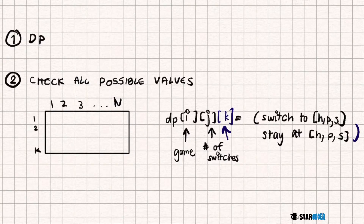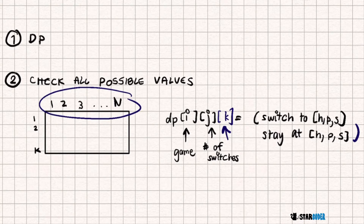The algorithm we're going to use for this question is dynamic programming, or DP. We're going to hold a three-dimensional DP. The first dimension will be the current game we're on — size N. The second dimension is the number of swaps we've made — size K. The third dimension, size 3, is the current move we're holding: Hoof, Paper, or Scissors.